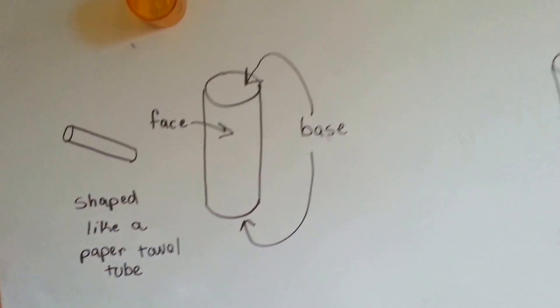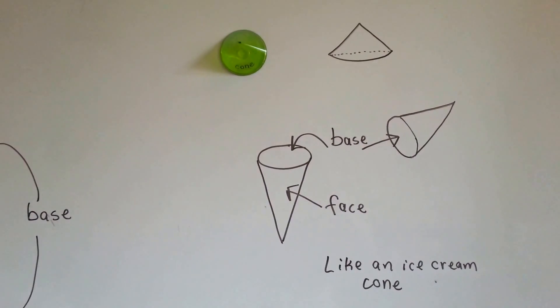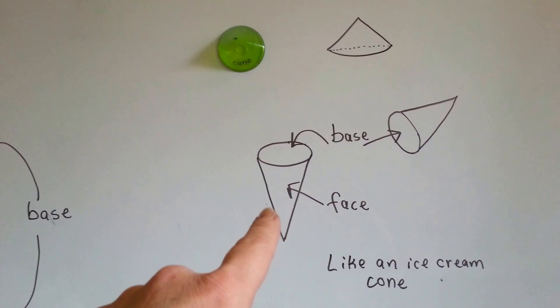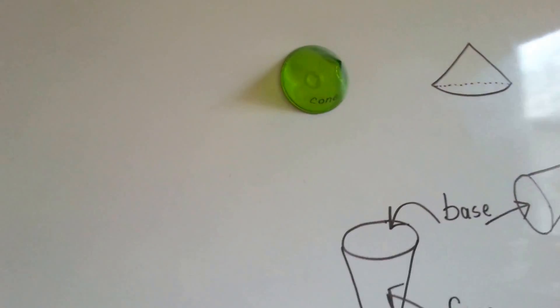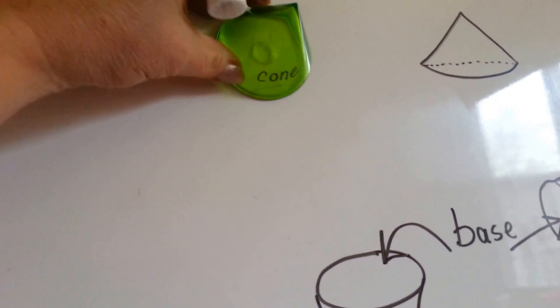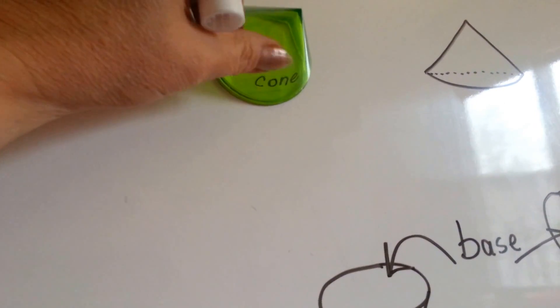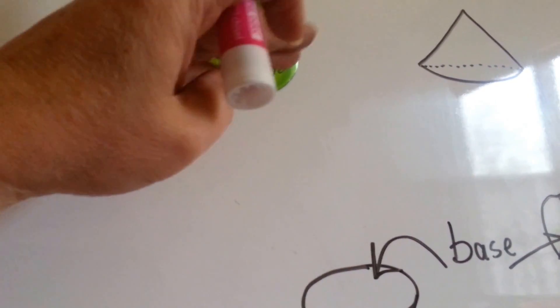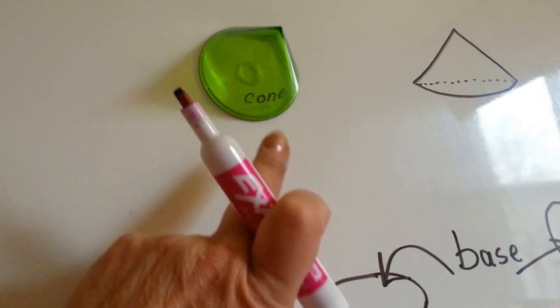The next shape I'm going to show you is the cone. And it's just like an ice cream cone. See? Here's one on the board. This lateral face, right here, is where I wrote the word cone.